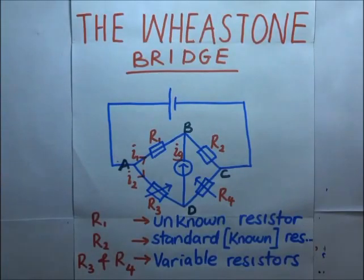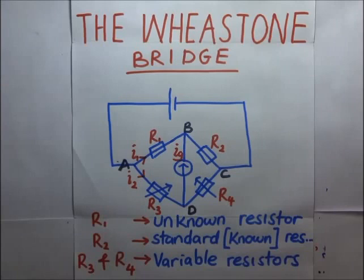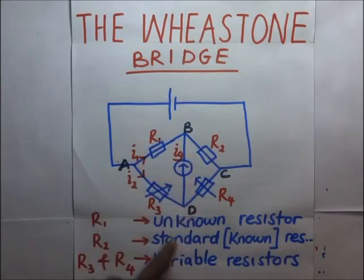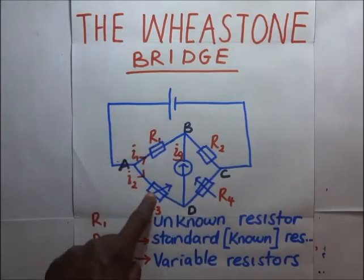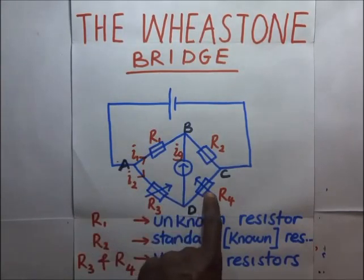The Wheatstone bridge is like any other electric circuit. Invented by Samuel Hunter Christie in 1833 and improved and popularized by Sir Charles Wheatstone in 1843, this circuit network is an arrangement of four resistors — R1, R2, R3, and R4 — as you can see in the diagram.